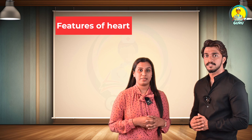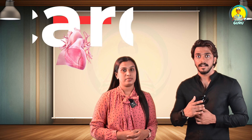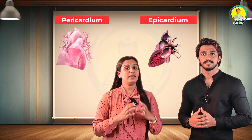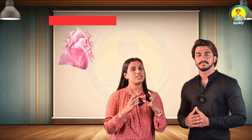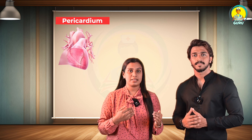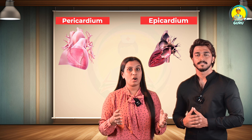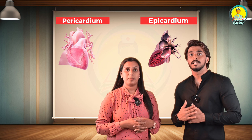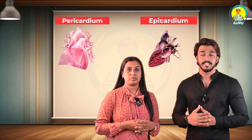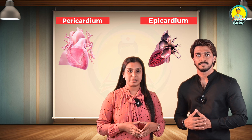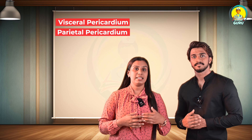The heart has three layers. The first is the pericardium or epicardium — the outer layer of the heart. Pericardium literally means 'on the heart.' The epicardium is the visceral layer of the serous pericardium. The functions of the pericardium are to limit cardiac distension, restrict excessive movement, and to protect and lubricate. It is composed of the visceral pericardium, parietal pericardium, and pericardial cavity.